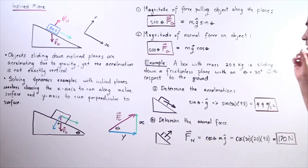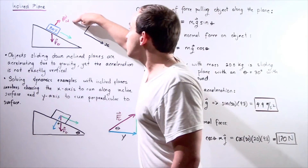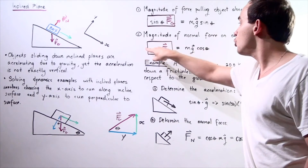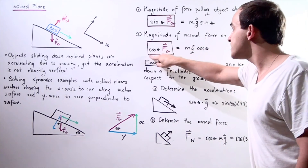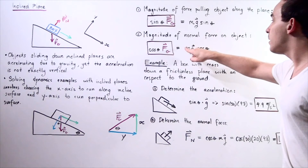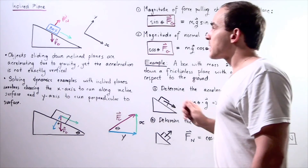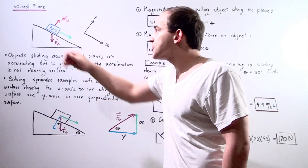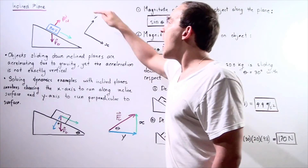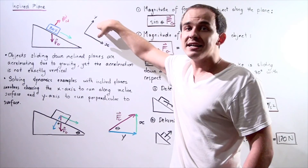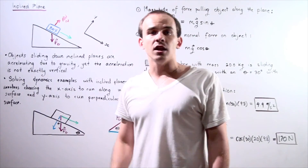For part B, we determine the normal force. The normal force has the same magnitude as the y-component we derived. So we take cosine of 30 multiplied by m times g: cosine 30 times 20 kg times 9.8 meters per second squared gives a normal force of 170 newtons. Our inclined plane exerts a force of 170 newtons on the box, directed perpendicular to the surface of our inclined plane along the y-axis.